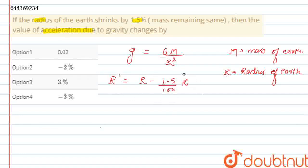So this will be the new radius when the Earth's radius shrinks by 1.5%. So on calculating this R prime, taking R as common, it will be equal to 1 minus 0.015, that is 0.985 R. So this is the new R.